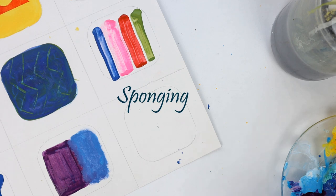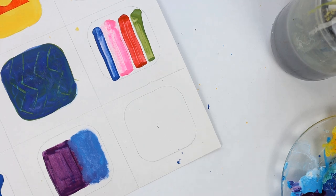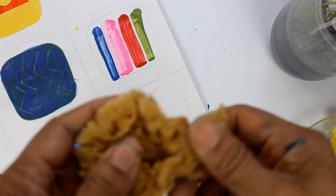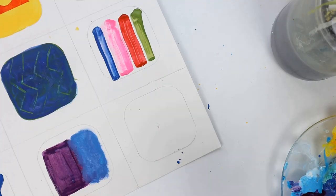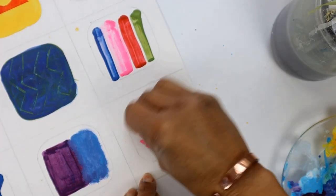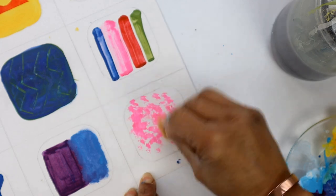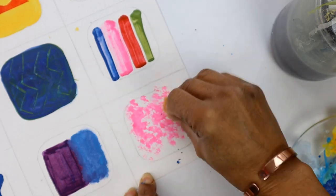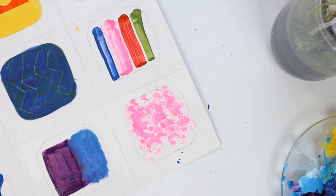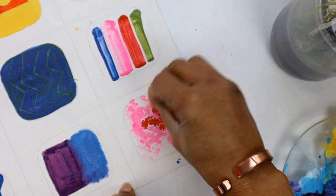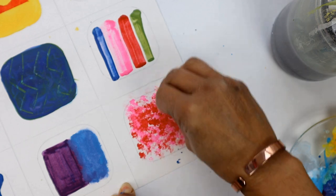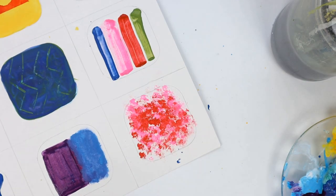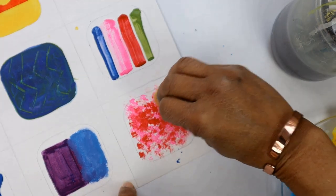Next up we're going to be doing some sponging. Now you can get a similar effect using tissue paper or paper towel, but sponges are so soft and useful. You can actually vary the amount of paint that it picks up. You can sponge over either wet paint or dry paint, and also sponges are reusable so you can wash them and reuse them time after time. You can get a similar effect with paper towel, but of course once you've done this with the paper towel you have to throw it away.